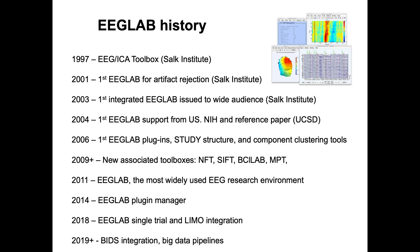EEGLAB, or its ancestor, was created in 1997 at the SOC Institute. Then, in 2001, we had the first version of EEGLAB for artifact rejection — at that time it was only doing artifact rejection. In 2003, we integrated all the tools and released EEGLAB to a wider audience.